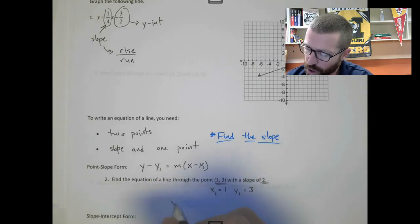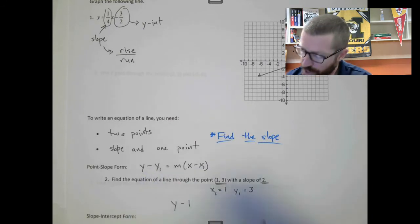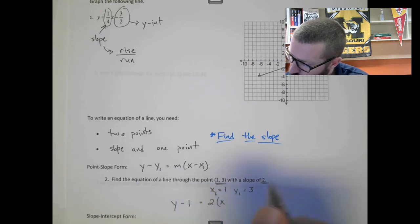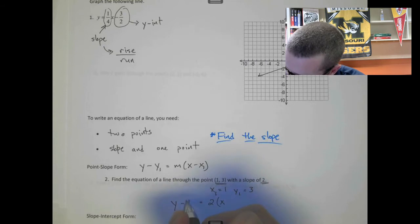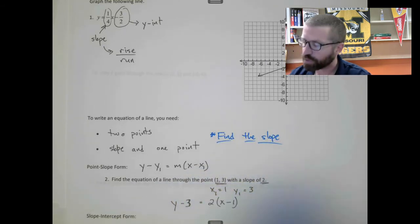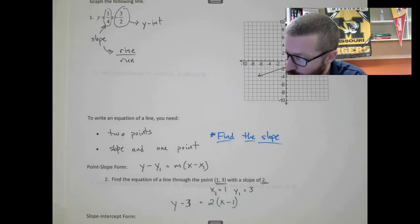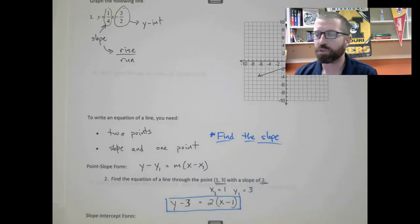So this makes our equation y minus 3 equals 2 times (x minus 1). When you see the minus sign, just think: change the sign. And that is an equation of a line in point-slope form. You do not have to simplify anything — that's valid as an equation of a line.